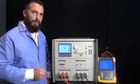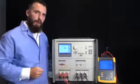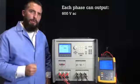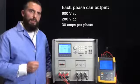The 6003A has six sets of voltage and current terminals that provide an easy way to configure a highly accurate three-phase source. Each phase is capable of outputting 600 volts AC, 280 volts DC, and 30 amps per phase.